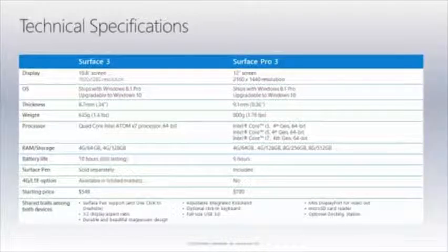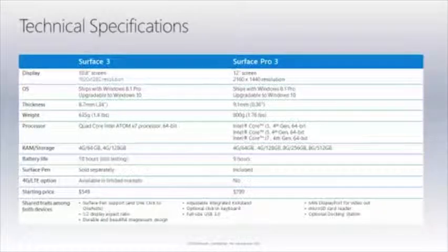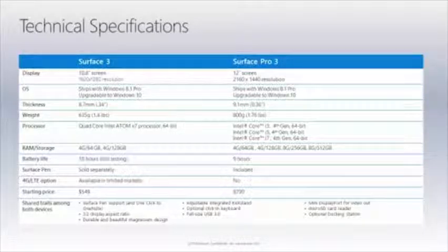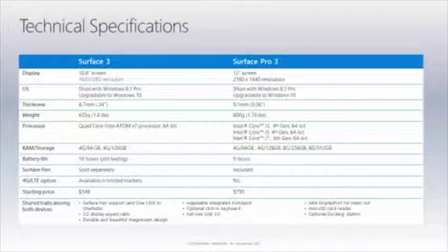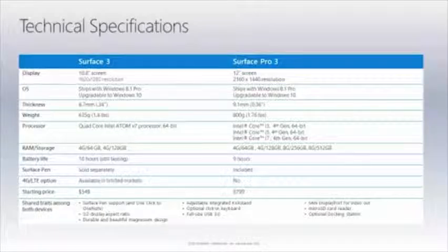This table compares the technical specifications for Surface 3 and Surface Pro 3. Let's go through some of the key details here. Surface 3, just like Surface Pro 3, ships with Windows 8.1 Pro. Both devices, Surface 3 and Surface Pro 3, are not upgradeable to Windows 10. A key point to know is that despite running a quad-core Intel Atom X7 processor, Surface 3 runs 64-bit architecture for the operating system.